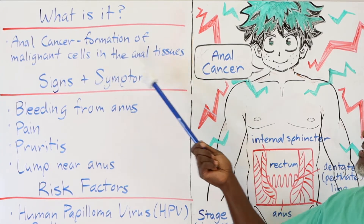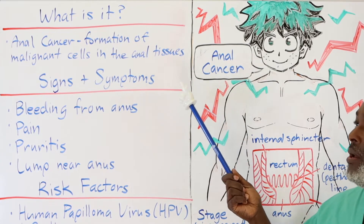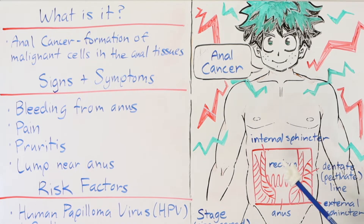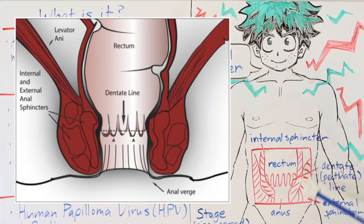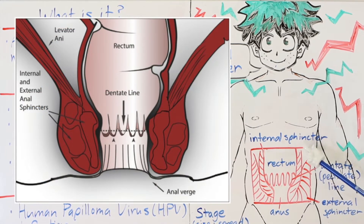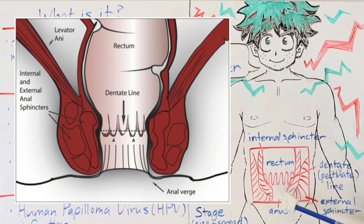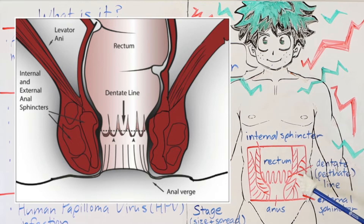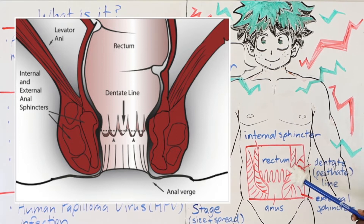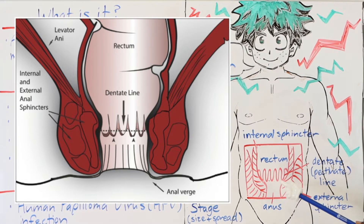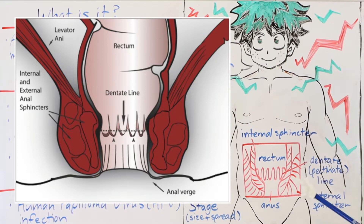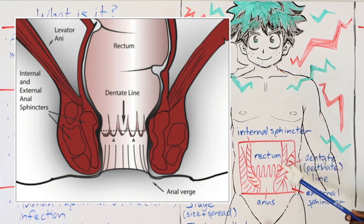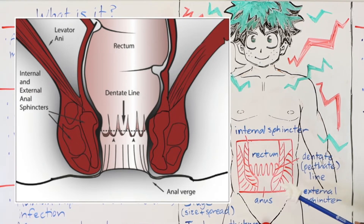Anal cancer: formation of malignant cells in the anal tissue. If you're talking about the anal tissue, let's clarify that first. This is that drawing that you see everywhere. Rectum is up here, internal sphincter, external sphincter. There's something that looks like a squiggly line that goes circumferentially around — it's called the dentate line. This is an important line for a couple of reasons.